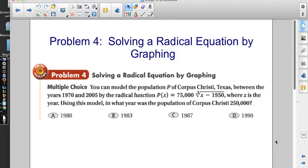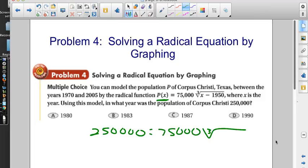This problem says we can model the population P of Corpus Christi, Texas, between the years 1970 and 2005 by the radical function P(x) = 75,000 ∛(x - 1950), where x is the year. Notice they didn't do a zero year - they've got x minus 1950 in there, so we're actually going to put that in. That's going to change our window when we set this up, otherwise we'll be hitting zoom six and going where's the graph? Using this model, in what year was the population 250,000? So we want to know 250,000 = 75,000∛(x - 1950).